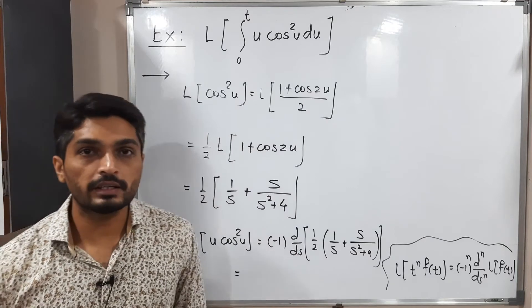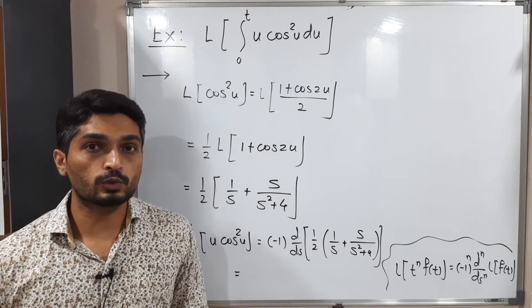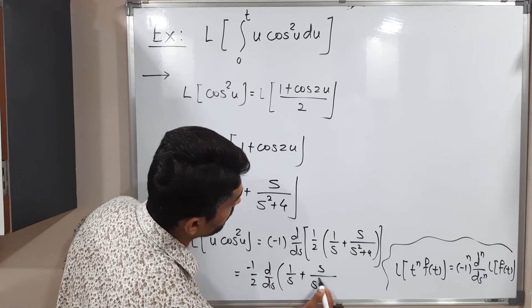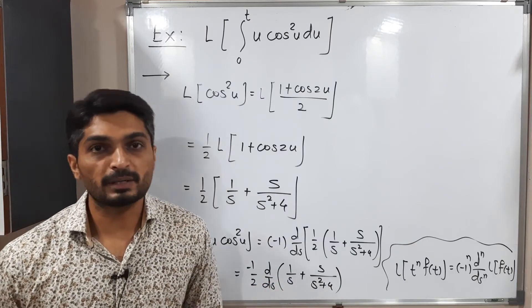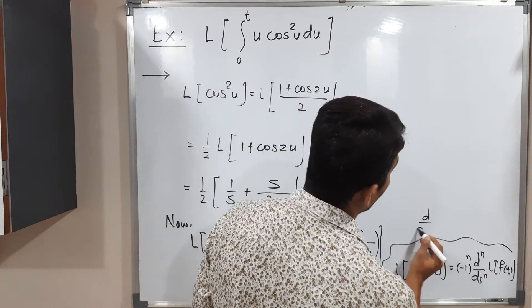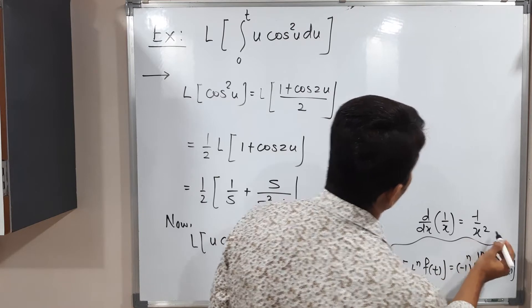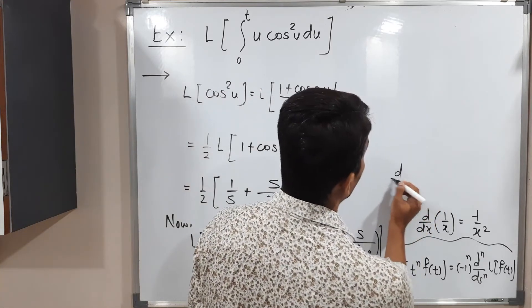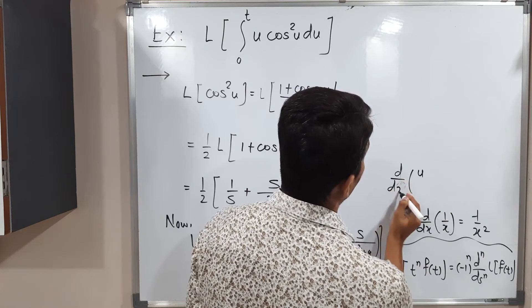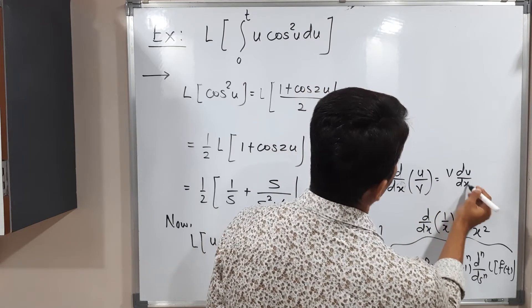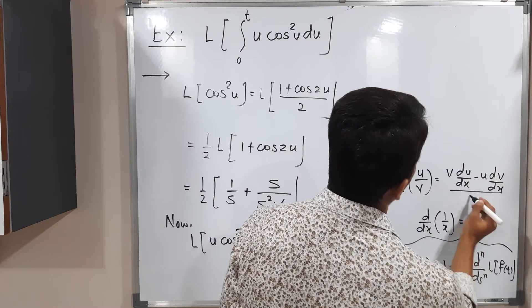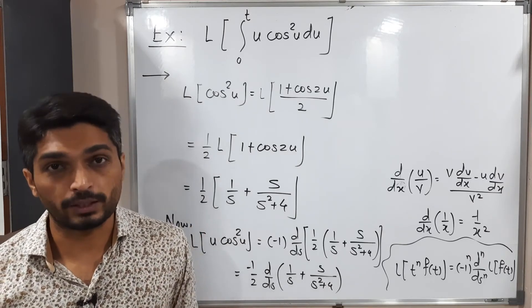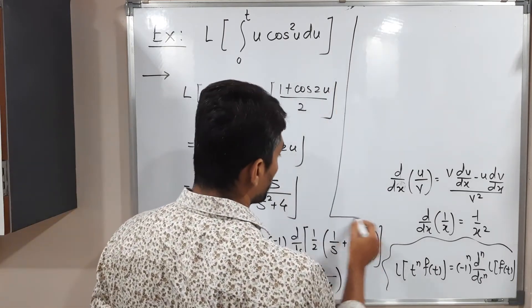Since 1/2 is a constant we can take it outside the derivative. So we need the derivative of [1/s + s/(s² + 4)]. Since addition is present we take separate derivatives. For 1/s, we use the formula d/ds(1/x) = −1/x², giving −1/s². For s/(s² + 4) we use the quotient rule: d/ds(u/v) = [v·(du/ds) − u·(dv/ds)] / v².